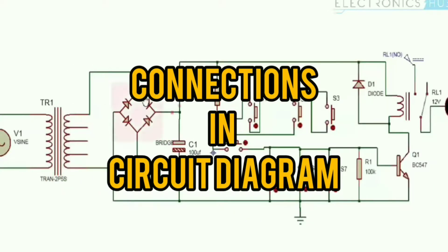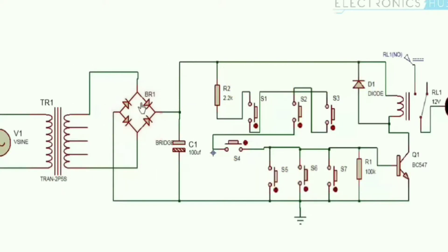Capacitor is used for pure DC. A diode for safety purpose. We use seven push buttons in this. Four switches are connected in series and other three switches are connected in parallel. We use buzzer connected to the relay.